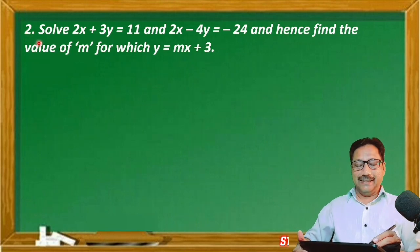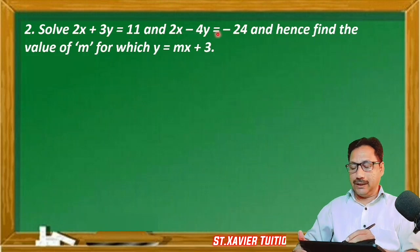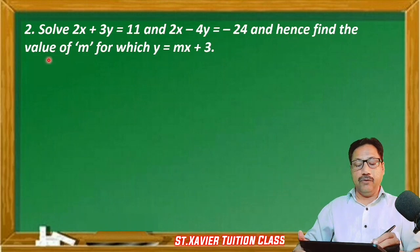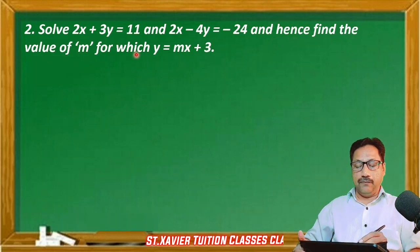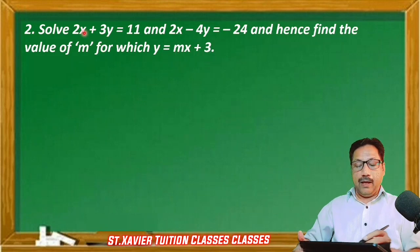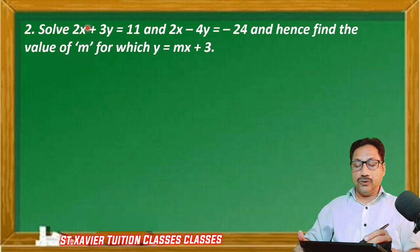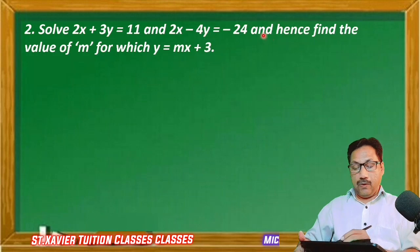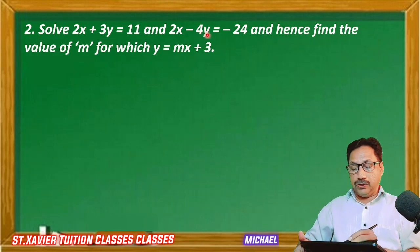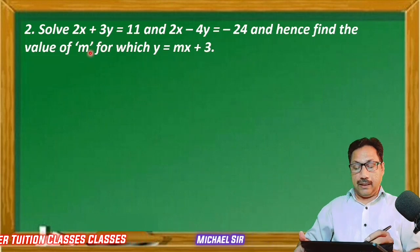Question 2: Solve 2x + 3y = 11 and 2x - 4y = -24, and hence find the value of m for which y = mx + 3. We have 2 equations. We have to solve the problem and find the values of x and y, and then find the value of m.